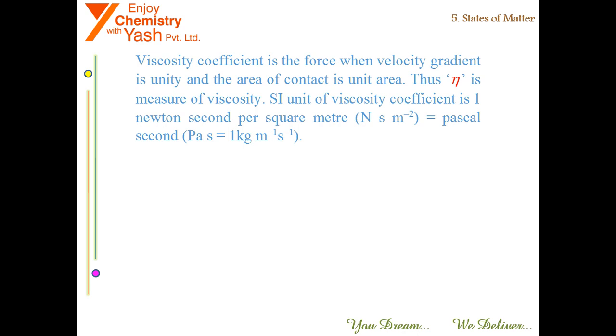SI unit of viscosity coefficient is 1 newton second per square meter, that is N·s·m⁻², which equals pascal second (Pa·s), which equals 1 kg·m⁻¹·s⁻¹.